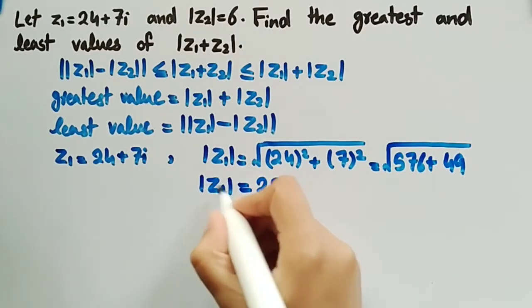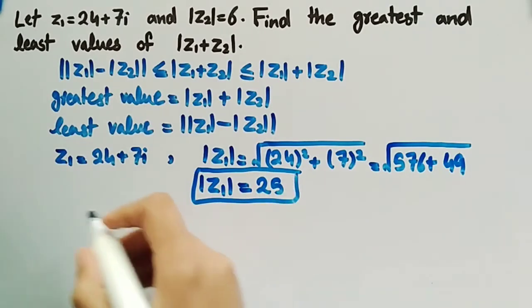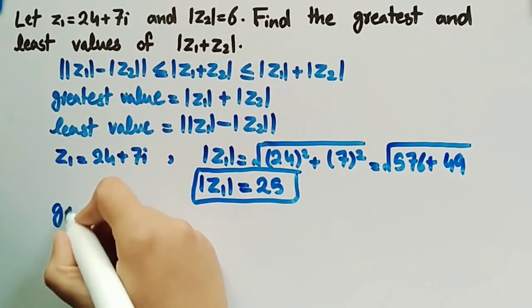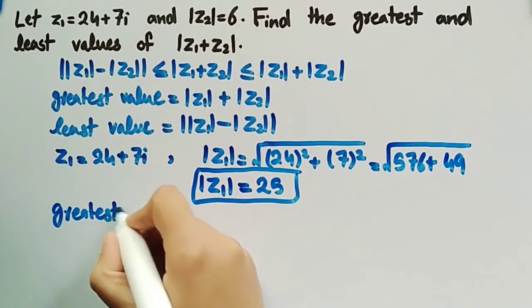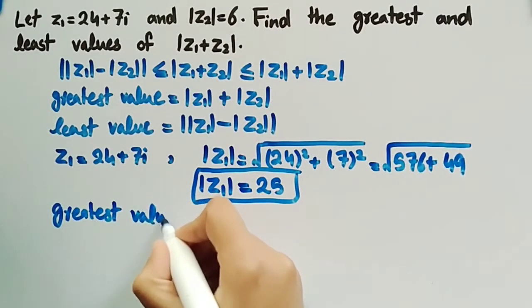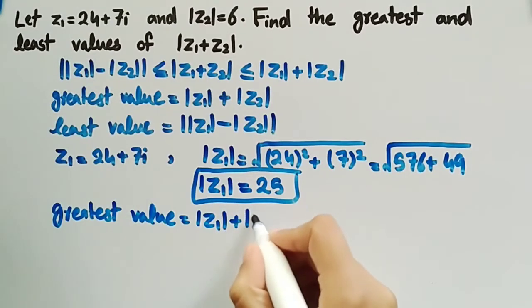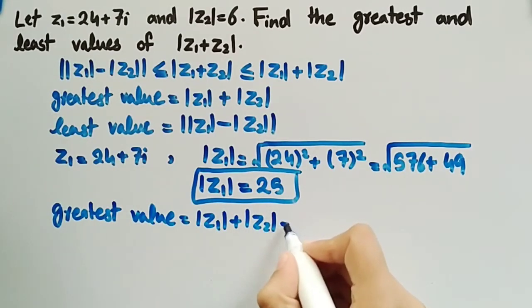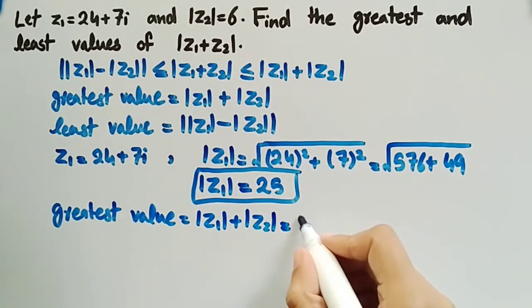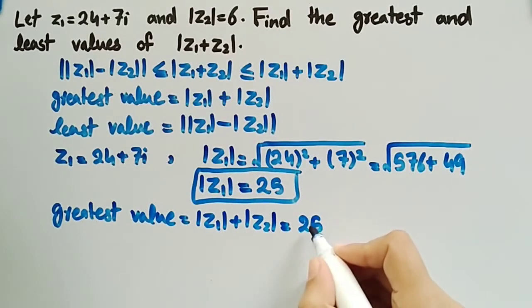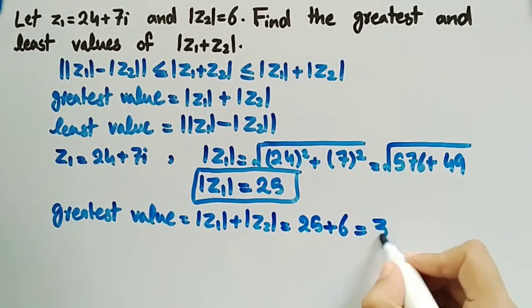So, mod of z1 is equal to 25. The greatest value is equal to mod of z1 plus mod of z2, which is 25 plus 6, equal to 31.